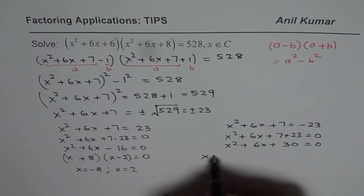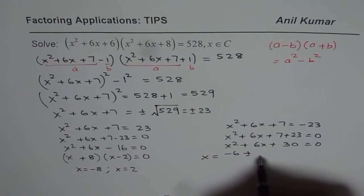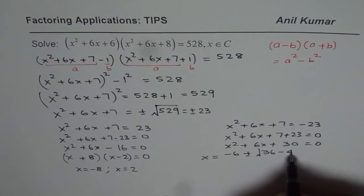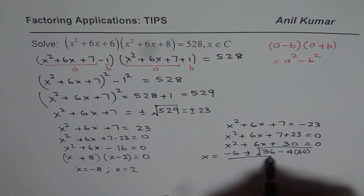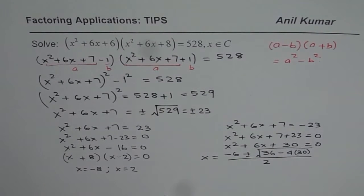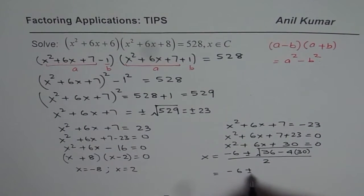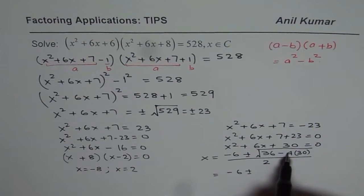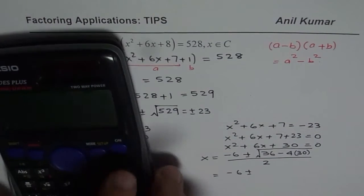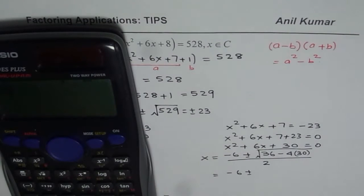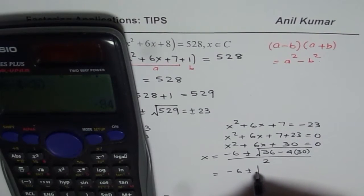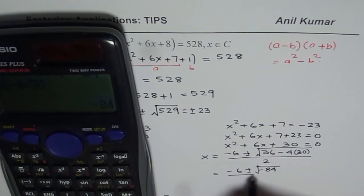Using the quadratic formula: x equals minus b, which is minus 6, plus or minus the square root of b squared minus 4ac, which is 36 minus 4 times 30, all divided by 2 times a, which is 2. Now 4 times 30 is 120, so we get 36 minus 120, which equals minus 84. So we have square root of minus 84, divided by 2.